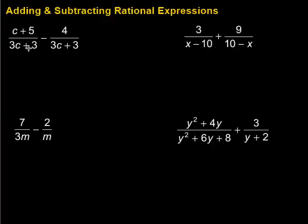Right here we have a denominator of 3c plus 3 and 3c plus 3. So we have a common denominator, so then all I need to do is just go ahead and do whatever operation it is, whether it's addition or subtraction, across the top. In this case, I'm going to have a denominator of 3c plus 3. Then on the top, I'm going to have c plus 5.